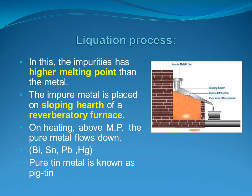Refining can be carried out by several methods. One method is the liquation process. In this process, a low melting metal forms a fusible liquid on heating and flows down. This method is employed only when the impurity has a higher melting point than the required metal. The impure metal is placed on the sloping hearth of a reverberatory furnace, and on heating above the melting point, the pure metal flows down.